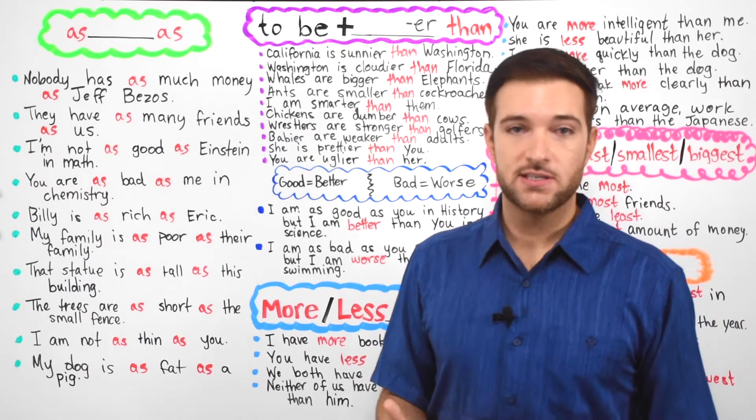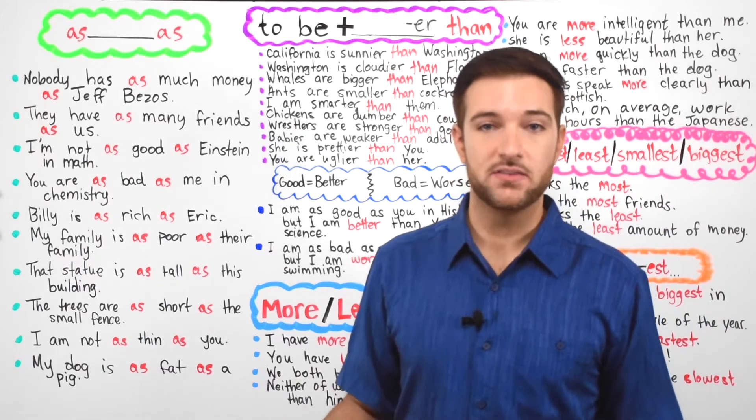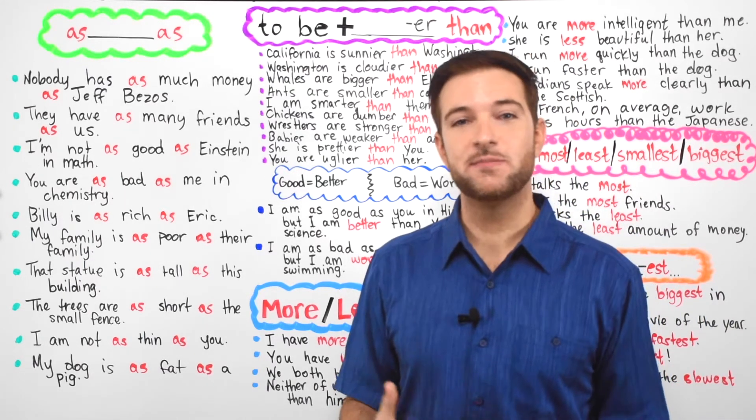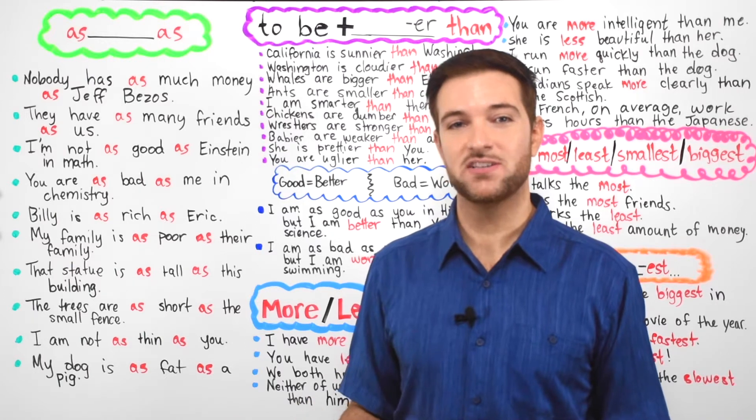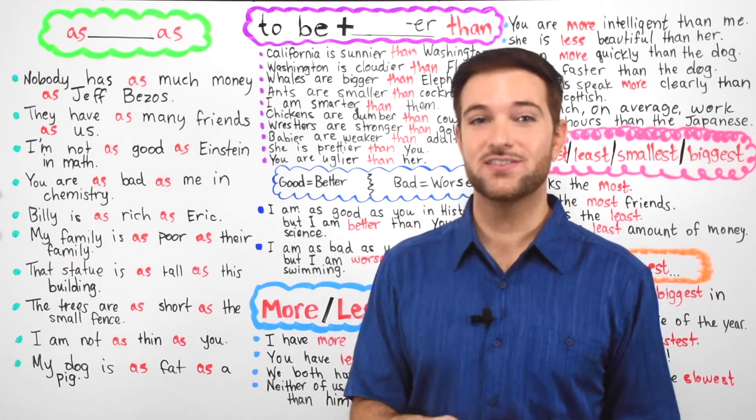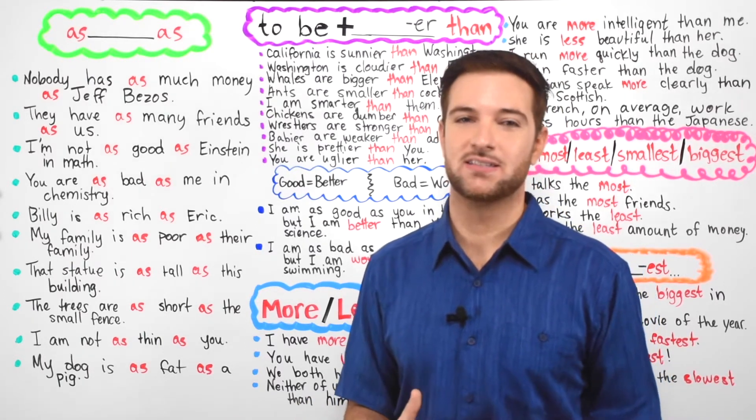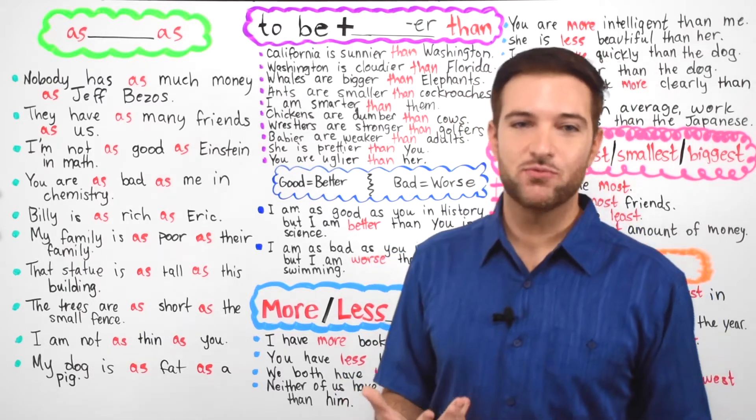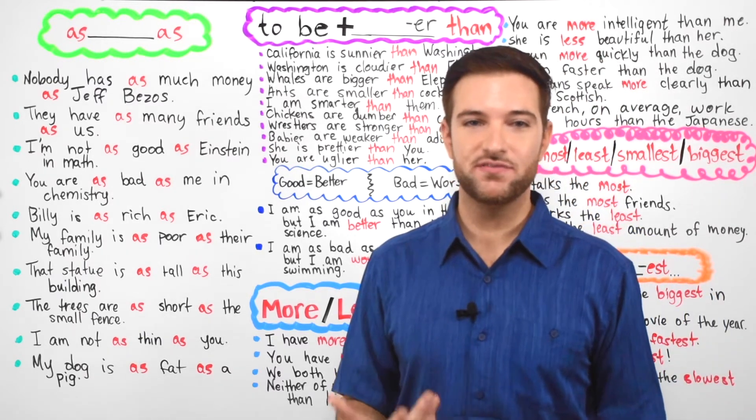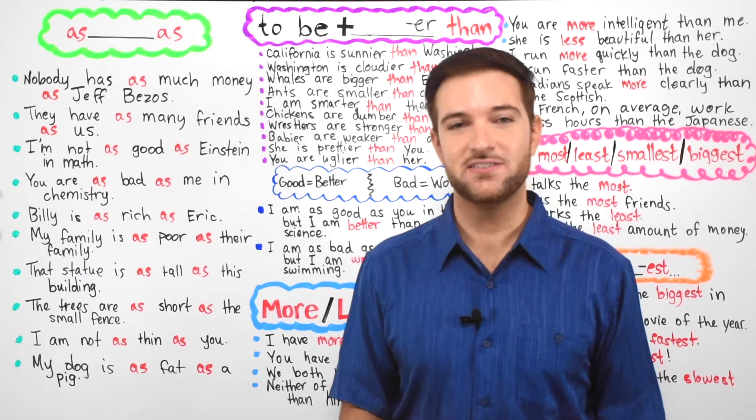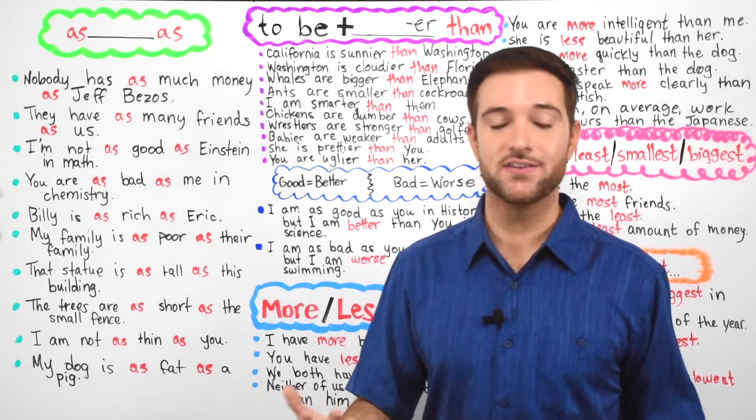Like when they say, for example, the elephant is more big than the cat versus the elephant is bigger than the cat. So the correct answer is the elephant is bigger than the cat. Indeed, native speakers can recognize the difference, but it's much more difficult for English learners to recognize these differences.